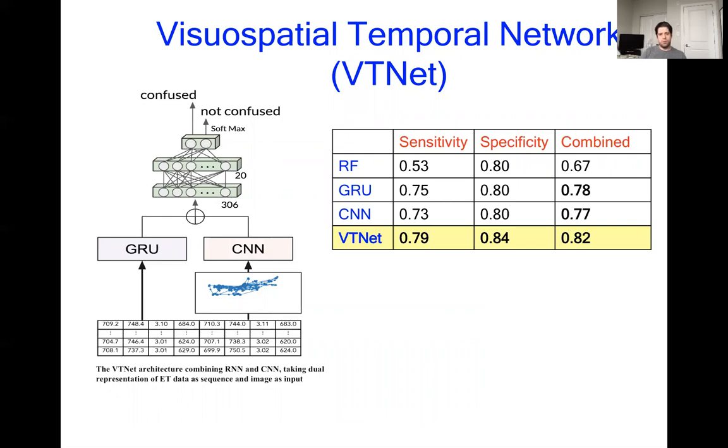We went from a 0.75 sensitivity with the GRU, 0.73 with the CNN, up to a 0.79 with the VT net. Another interesting fact was this is the first time we saw an increase in specificity, which is the ability to predict not confused items, which went from 0.8 in all previous instances to 0.84 in this case. This concludes our main results.